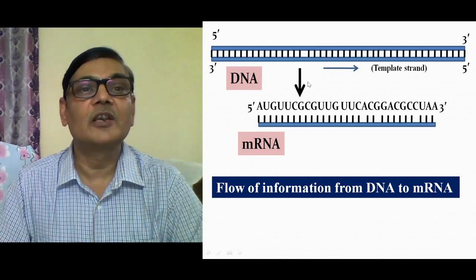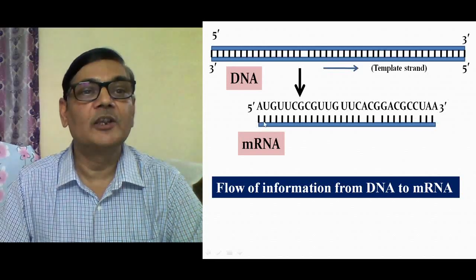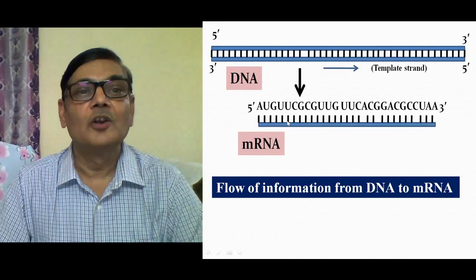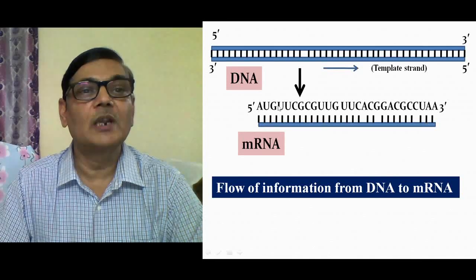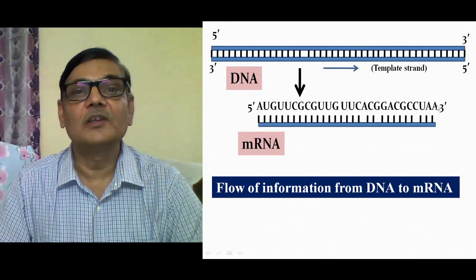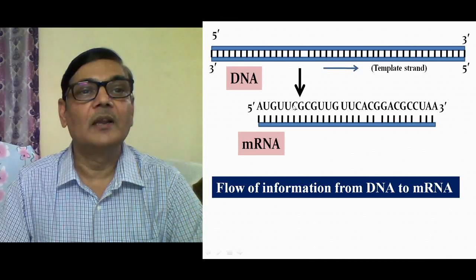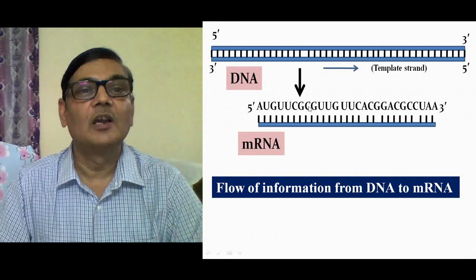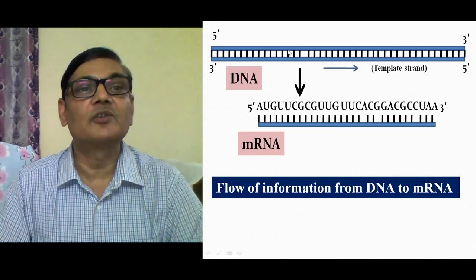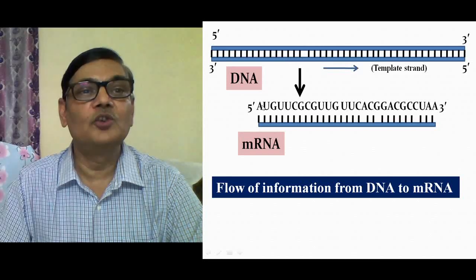After the transcription process, the mRNA molecule gets synthesized. We find that nucleotides are arranged in the messenger RNA, and these nucleotides are A, U, G, C — that is adenine, uracil, guanine, and cytosine. These are the four bases present here. T is actually present in the DNA molecule, so instead of T, U comes in RNA.